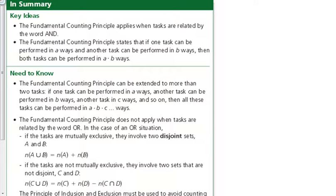So in summary, the Fundamental Counting Principle applies when tasks are related by the word AND. It states that if one task can be performed in A ways and another task can be performed in B ways, then both tasks can be performed in A times B ways.